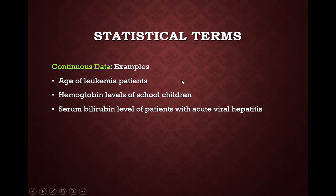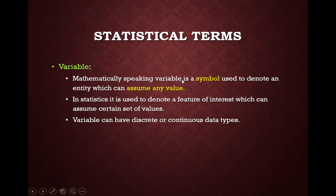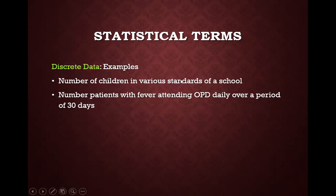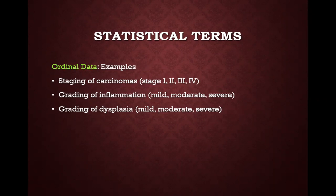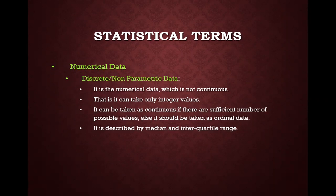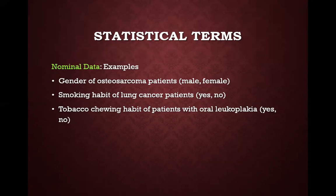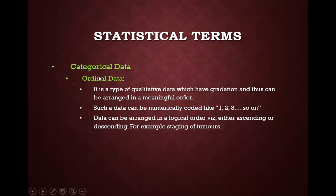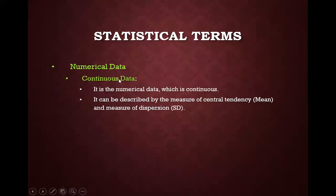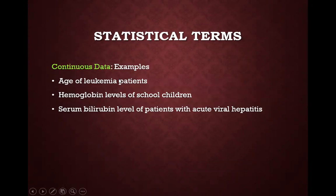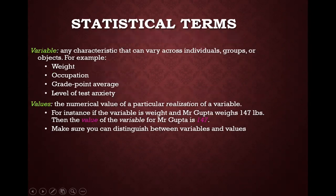To summarize the types of statistical data: data can be divided into categorical and numerical. Categorical data is further subdivided into nominal data and ordinal data, and subtypes of numerical data include discrete data and continuous data. This concludes the section on data types, and now we move on to certain statistical terms.